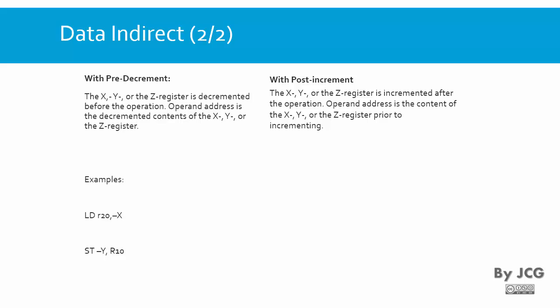Here is an example: you tell the microcontroller you want to load — read — whichever address is in X, but before accessing that address subtract 1, and store whatever is at that address into register 20. For post-increment, instead of minus X you have X plus, which means first you access X and then you add 1 to that address.